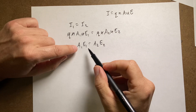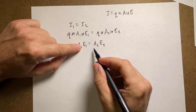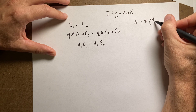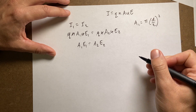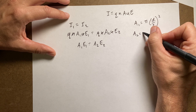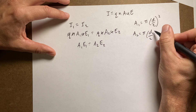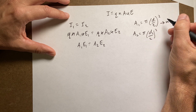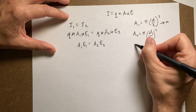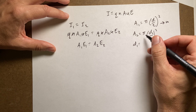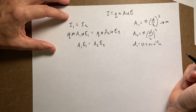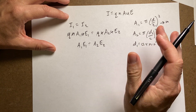Remember that A1 equals pi times (D1 over 2) squared, and A2 equals pi times (D2 over 2) squared — that's the cross-sectional area of a circular wire. Make sure you convert the diameter to meters. D1 would be 0.4 millimeters, or 0.4 times 10 to the negative third meters. That's how you calculate those areas.